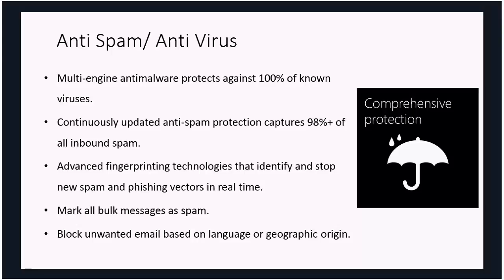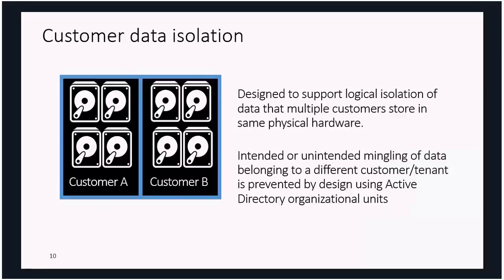When setting up these security systems or tweaking them, the recommendation is to use PowerShell. Create a script that does all the configurations the way you want, then when you go to the next customer you can rerun it against their tenant and get the same results. Customer data is isolated using logical isolation — even though it runs on the same hardware, it's isolated using Azure Active Directory organizational units, so no users will see users outside their tenant.